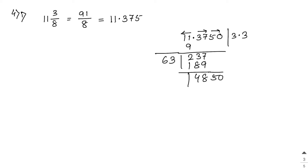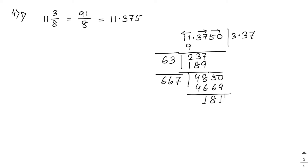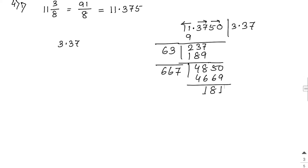Bring down 50 giving 4850. Double of 33 is 66. Try 667×7=4669. That works. So quotient so far is 3.37. After checking, the square root of 11.375 is approximately 3.37. You can solve the remaining parts of sum 4 in the same way.